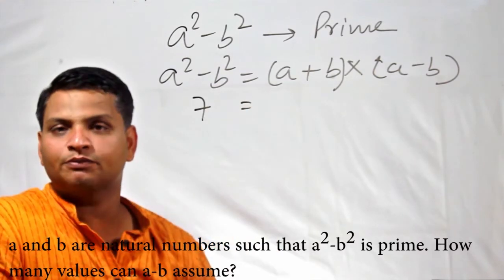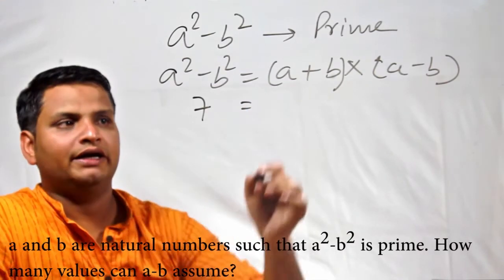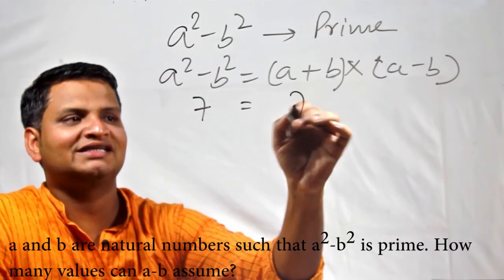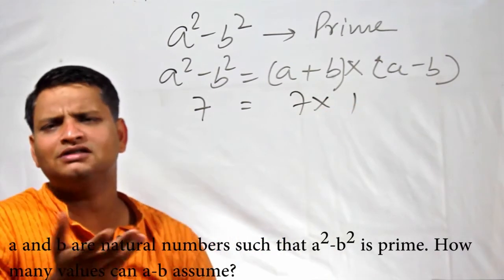If I want to write 7 as a product of two numbers, the only possible way is 7 × 1. That's the definition of a prime number.